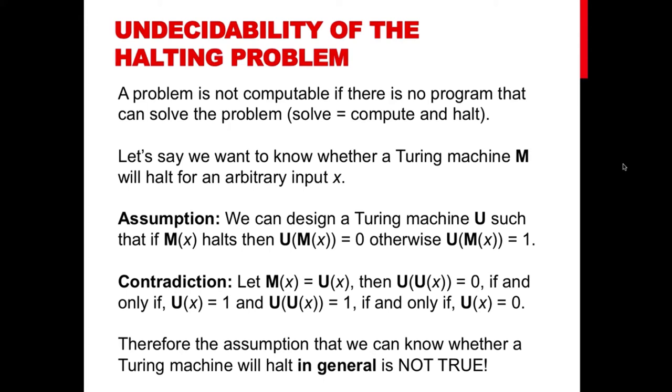So this means that our assumption, the initial assumption that you can actually know whether you can write another program to know if other program halts or not, was actually wrong. And indeed it is not possible to know in general whether a Turing machine M will ever halt or not.